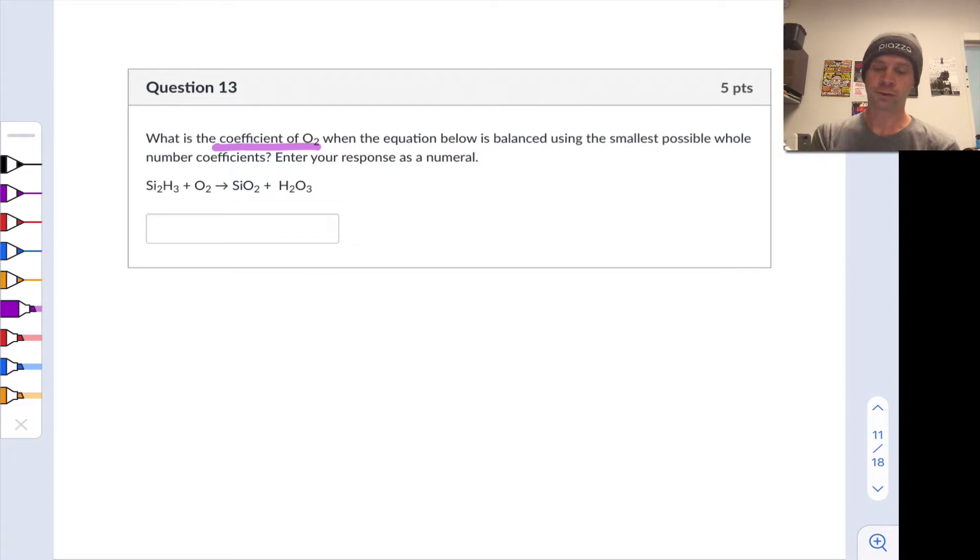So we're going to want to use the smallest whole number coefficients to do this. This is important because any scaling of all of those coefficients is, of course, another valid way to write the chemical equation. And we're going to enter our response as a numeral. Alright, well I'm going to go ahead and rewrite the chemical equation a little bit bigger so that we can move things around and sort of appreciate what's going on here.